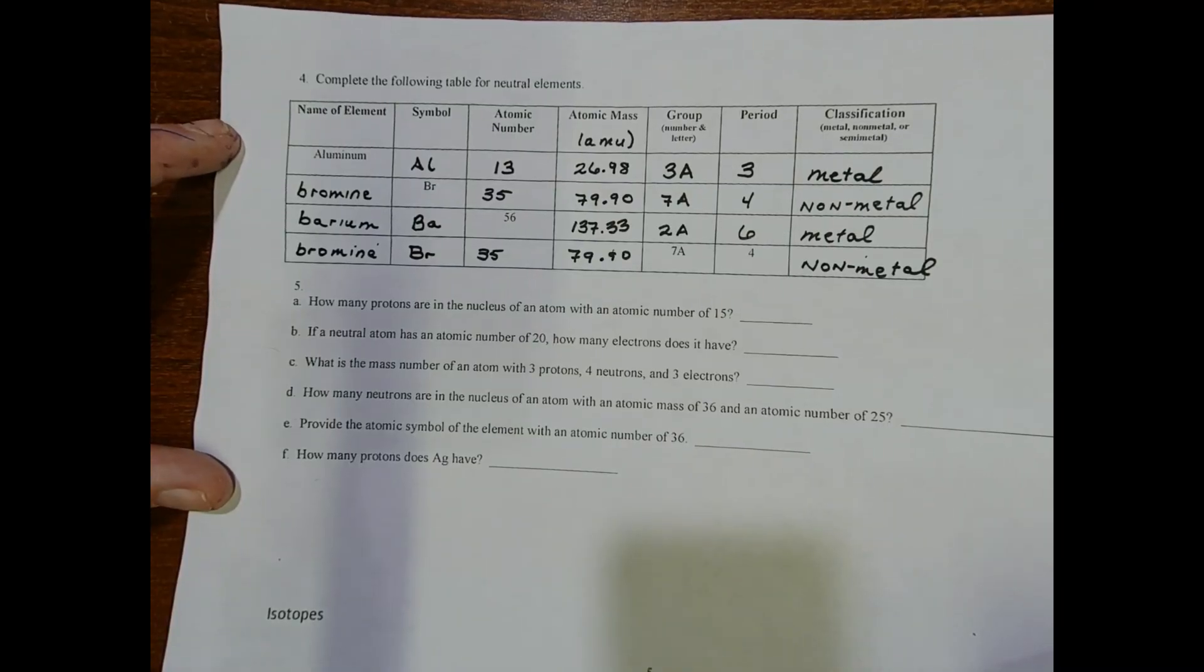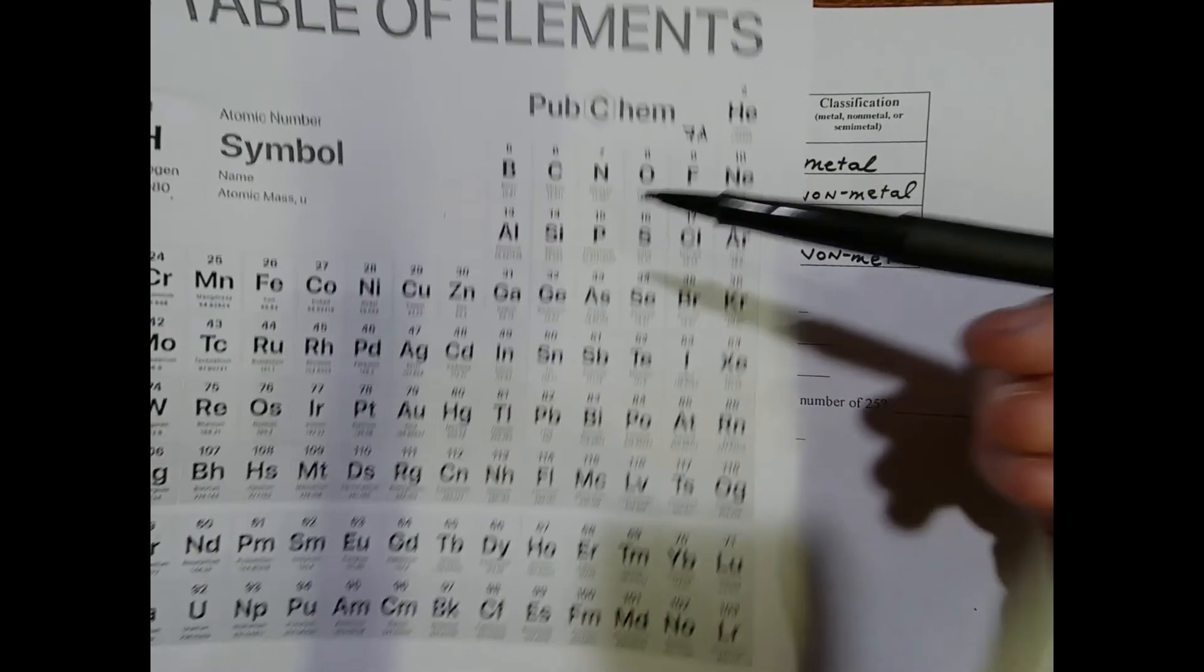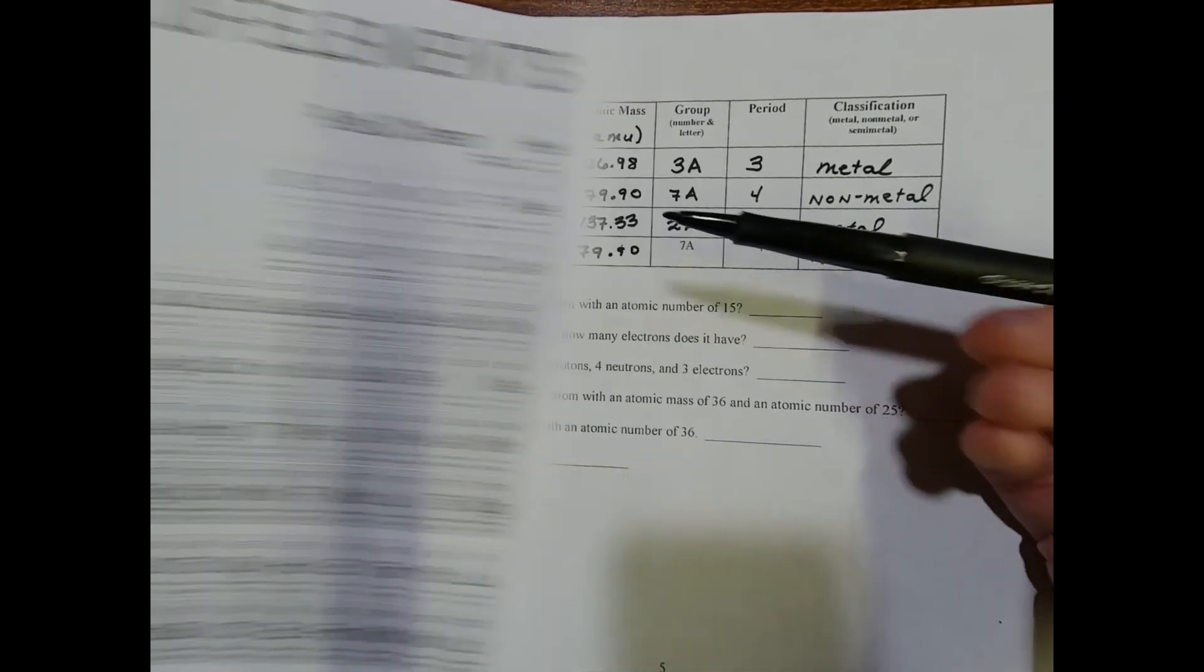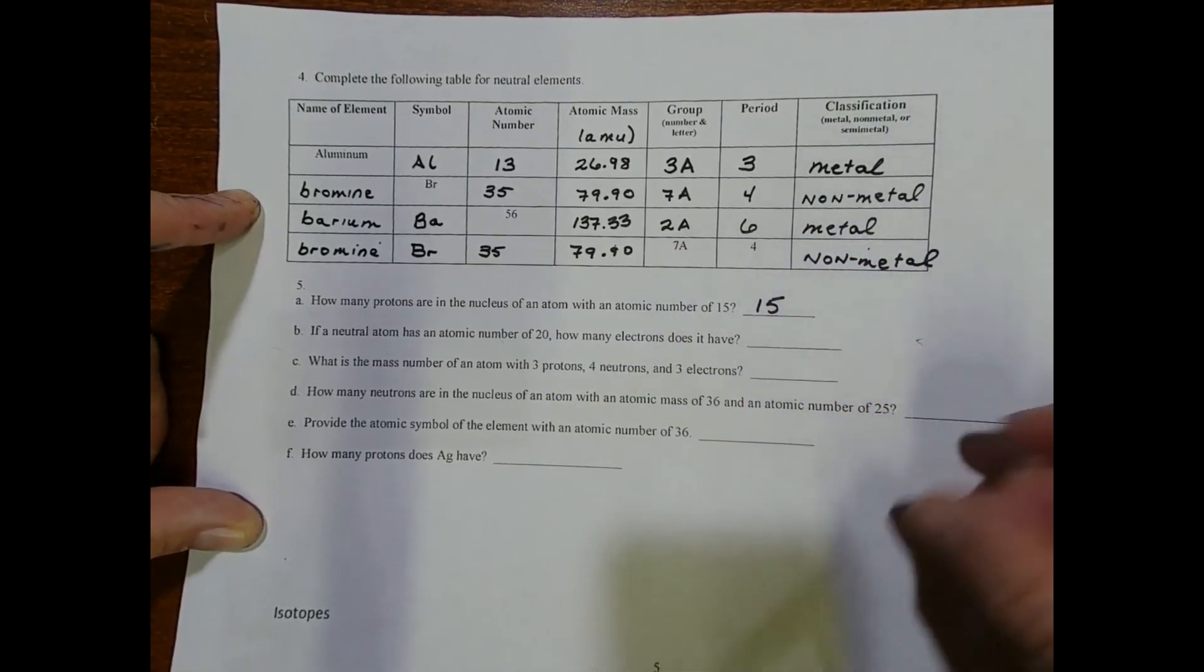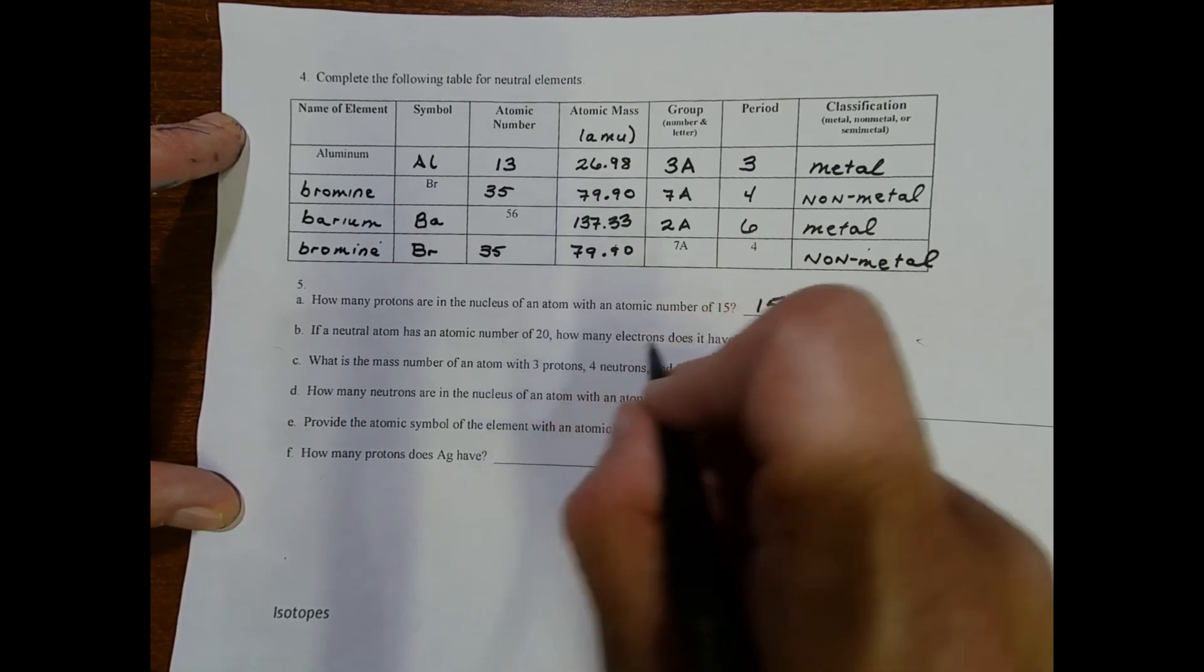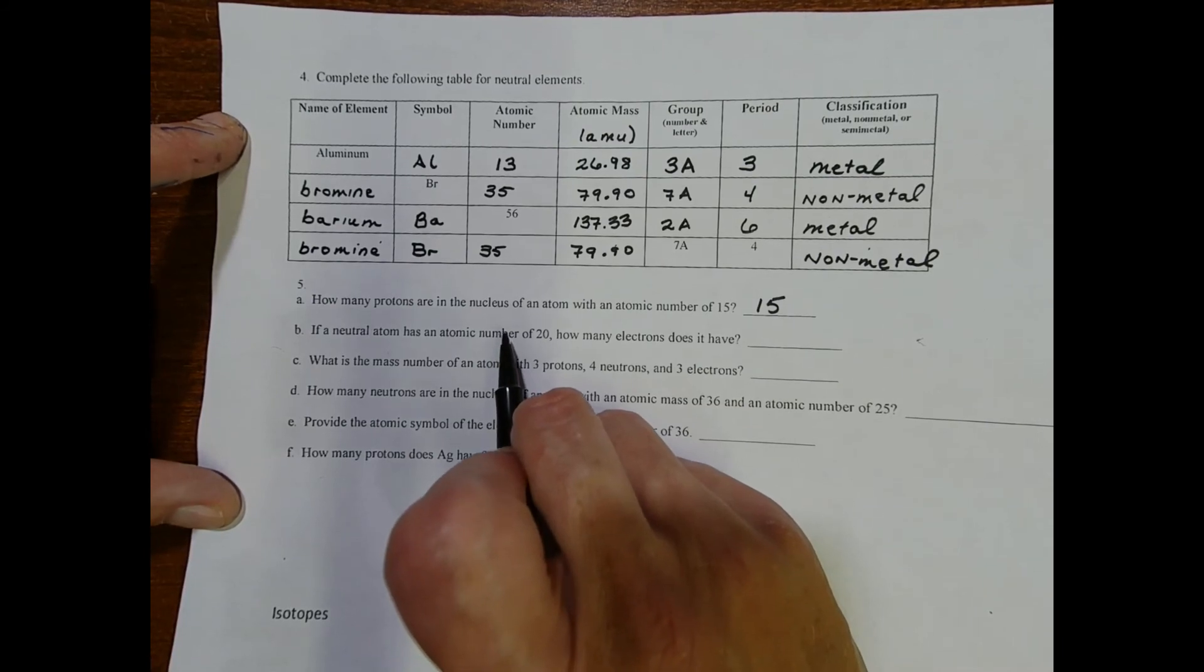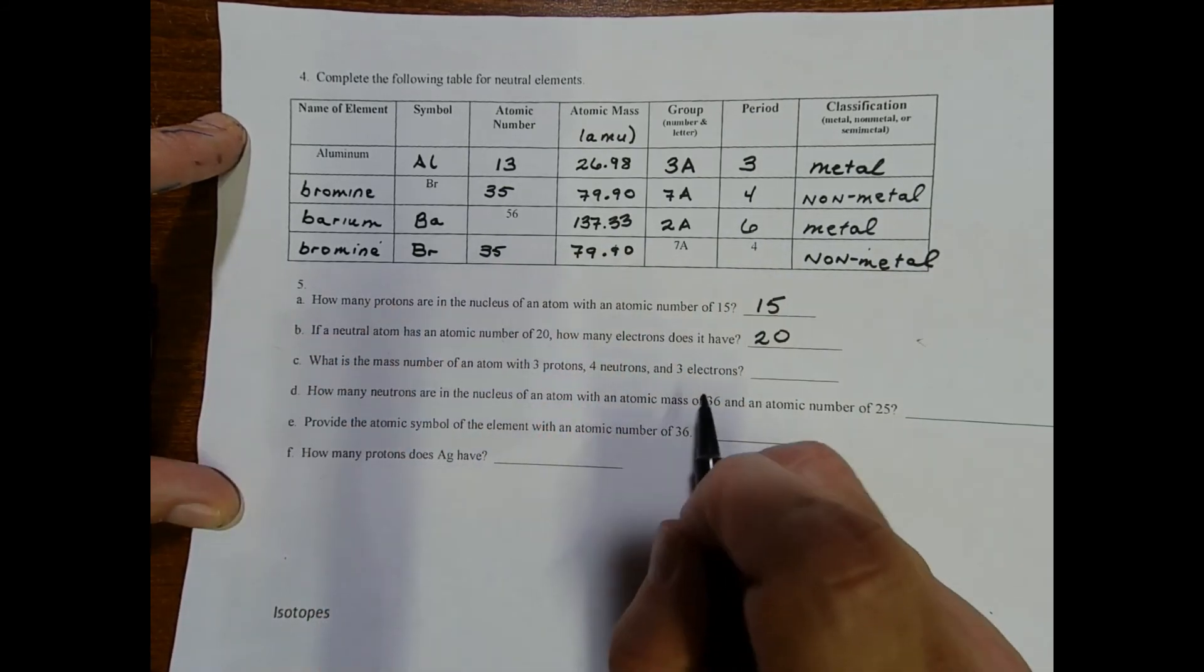Moving on to the next exercise: How many protons are in the nucleus of an atom with an atomic number of 15? I could use my periodic table, but I really don't need to. Number 15 is phosphorus, but the atomic number gives me the number of protons. Since they gave me the atomic number, I know that we're talking about something with 15 protons. If a neutral atom has an atomic number of 20, how many electrons does it have? The atomic number for neutral atoms is equal to both the number of protons and the number of electrons.